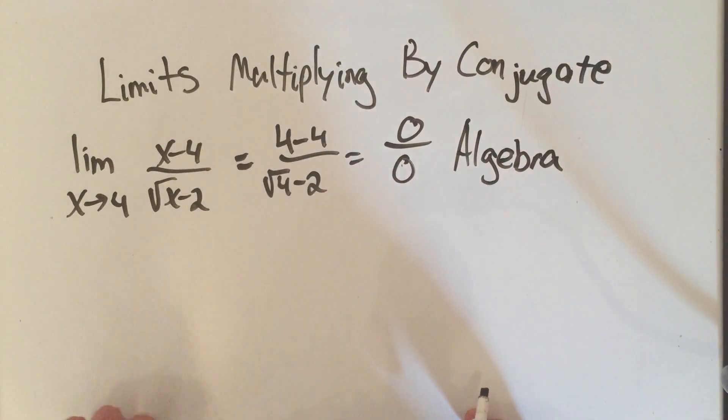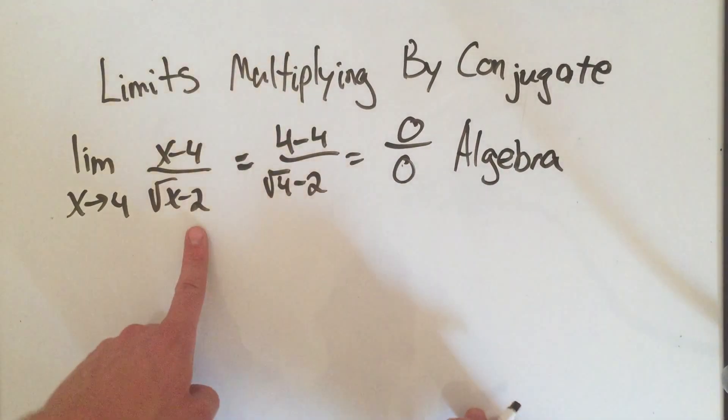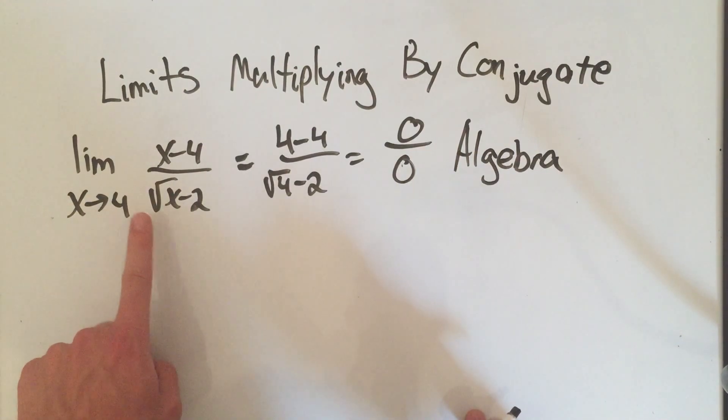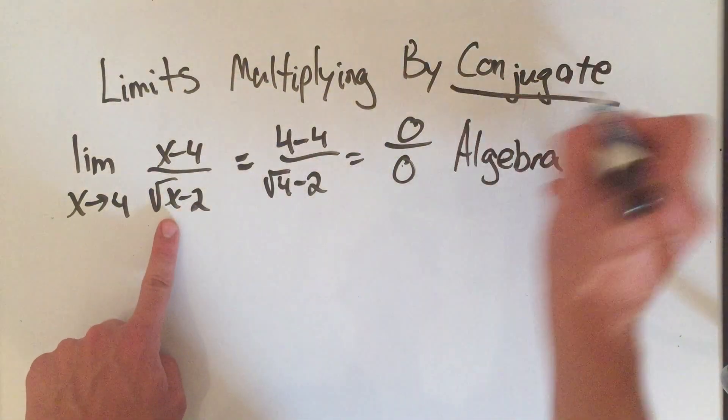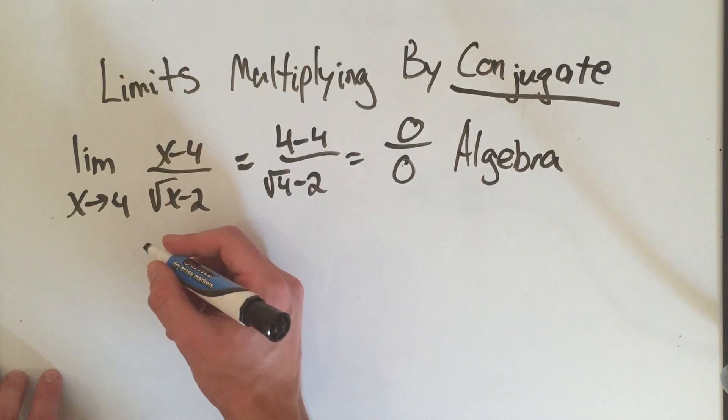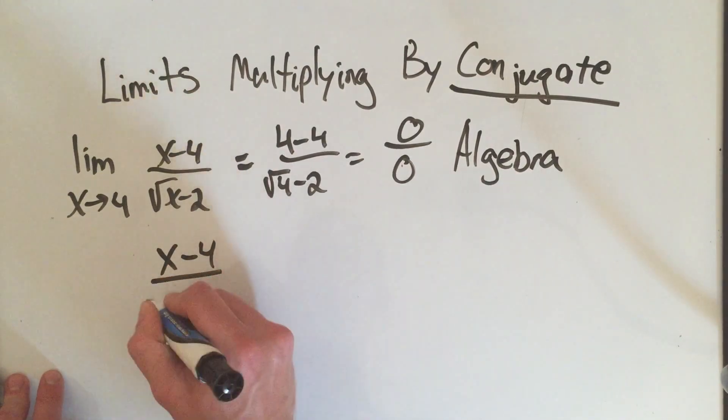So now you have to pick which algebra technique we're going to use on this, and the tip-off is this square root. The fact that I see this square root means we're going to multiply by the conjugate. So I'll remind you of what that means.